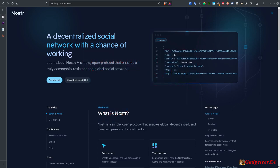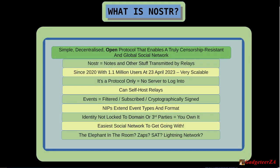Starting with what is NOSTR: the brief summary is it's a simple decentralized open protocol that enables a truly censorship-resistant and global social network. It's not a protocol controlled by a centralized social network like Twitter or Reddit. This protocol is actually evolving and updating with suggestions from the community itself, so it really has been expanding — it hasn't been static.